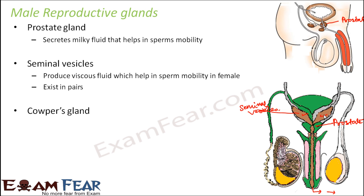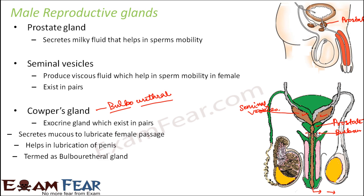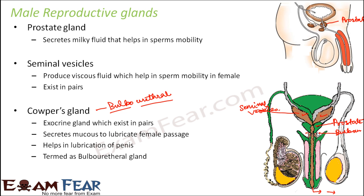The third gland is the Cowper's gland, also known as the bulbo-urethral gland. It is called bulbo-urethral because it looks like two small bulbs and is present very close to the urethra. It is an exocrine gland that exists in pairs. It secretes mucus to lubricate the female passage. The female passage as well as the penis both need to be lubricated so that the penis can be inserted into the vaginal passage — that lubrication is provided by the secretion of the Cowper's gland.